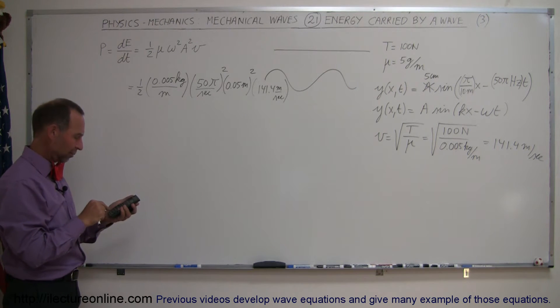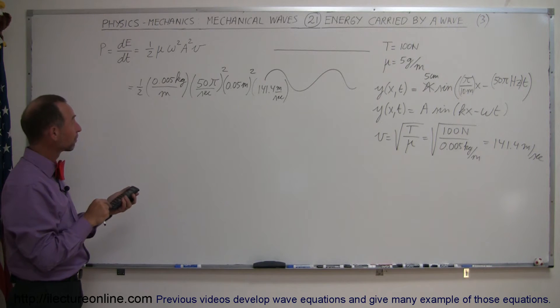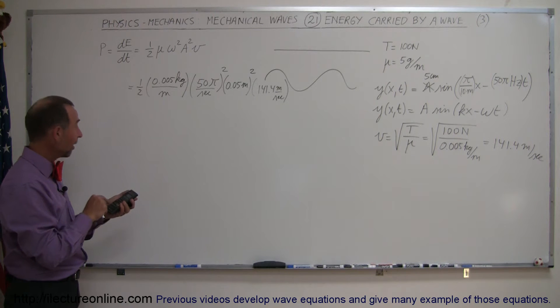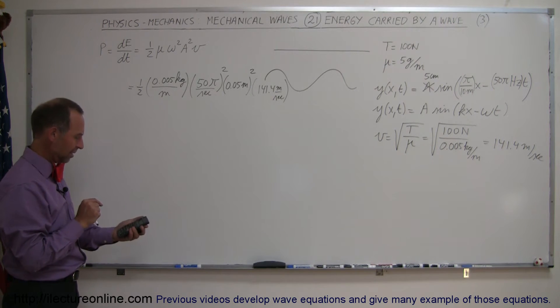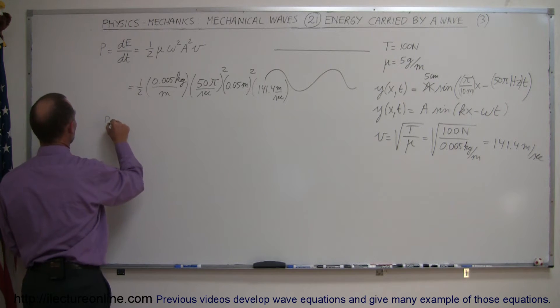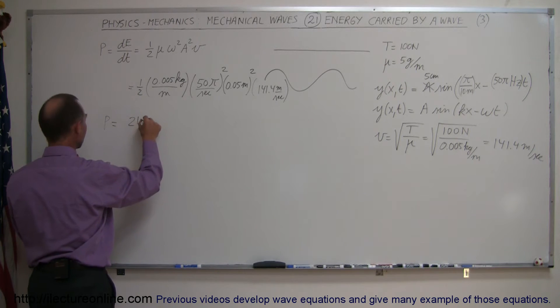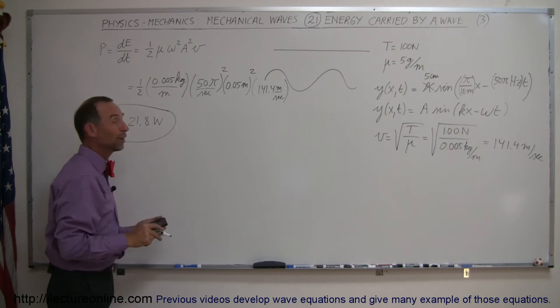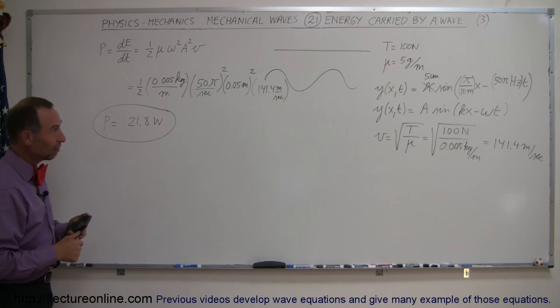So we have that. So times 0.05 squared, times 50 squared, times pi squared, times 0.005, and times 0.5 equals, and I get the power is equal to 21.8, and of course the units would be watts, or 21.8 joules per second of energy being transported over that string.